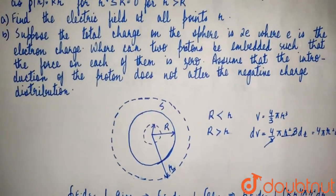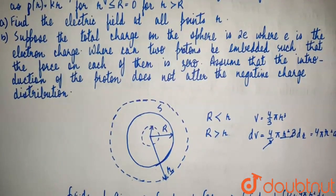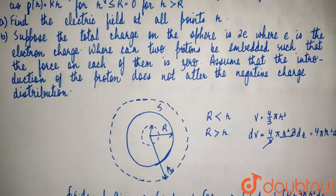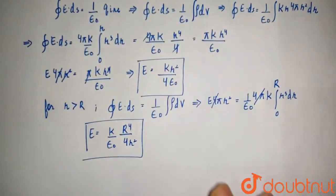Now let's look at the second part. Suppose the total charge on the sphere is 2e, where e is the electron charge. Where can two protons be embedded such that the force on each of them is zero? We assume that the introduction of the proton does not alter the negative charge distribution, so the net force on each proton must be zero.